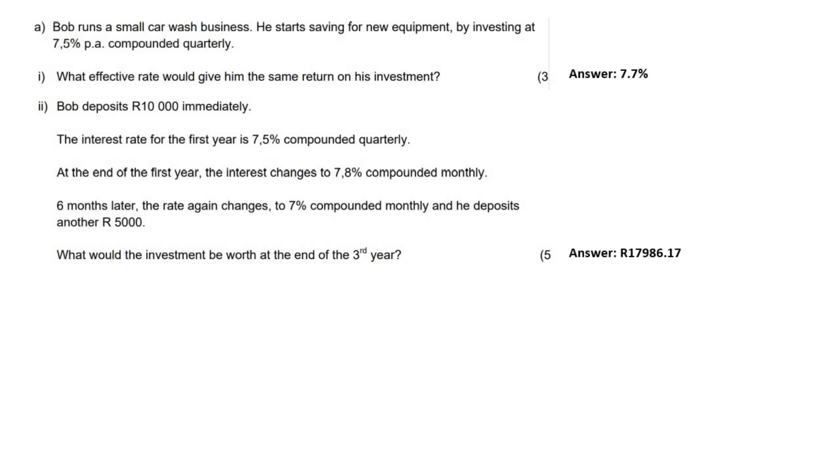In this question, we are told that Bob runs a car wash business. He starts saving for new equipment by investing. The first question asks what effective rate will give him the same return? Remember that when they say effective, they are talking about the yearly interest rate. Because in this one, they said that it's 7.5% per year, but then they say compounded quarterly.